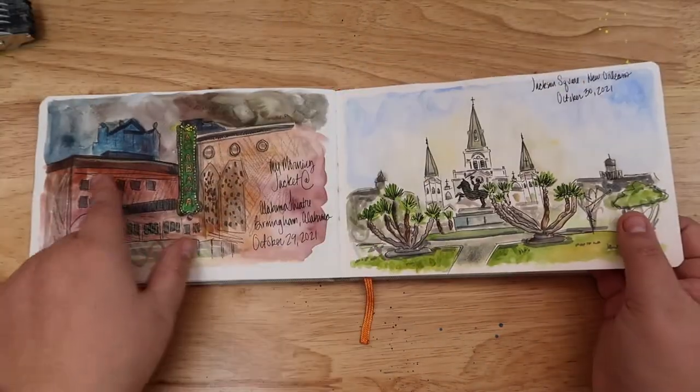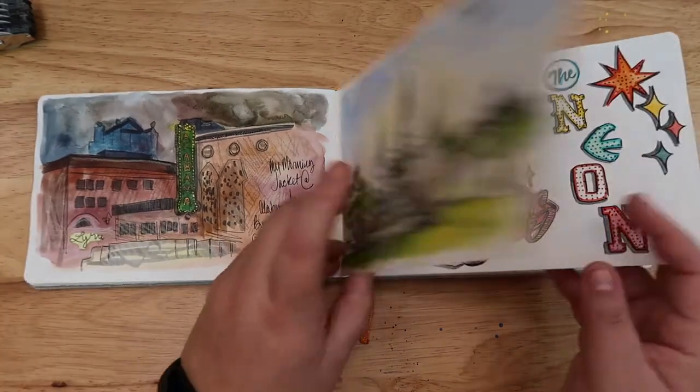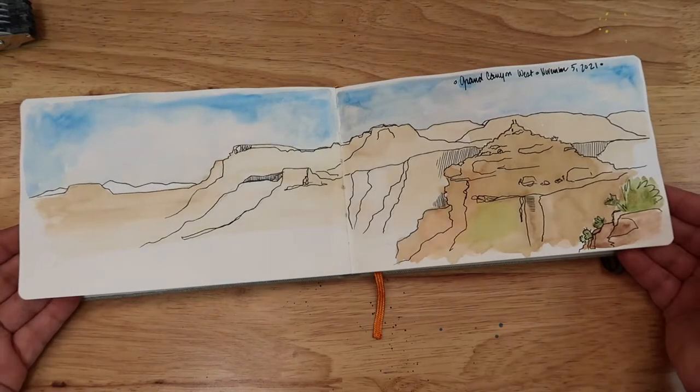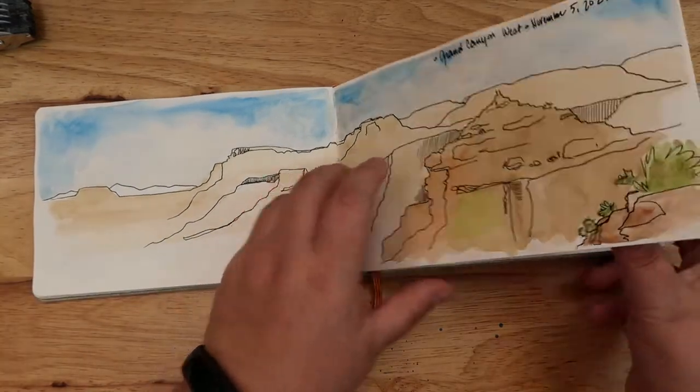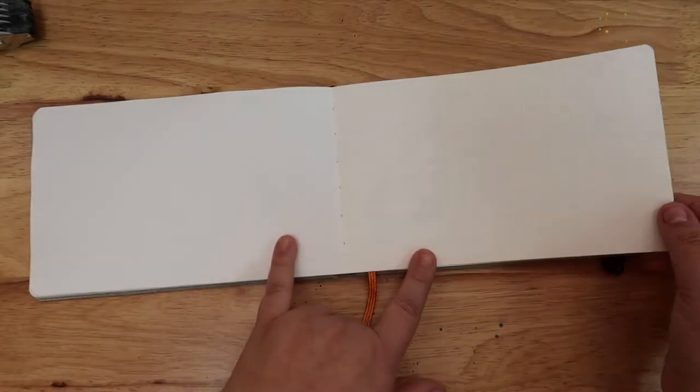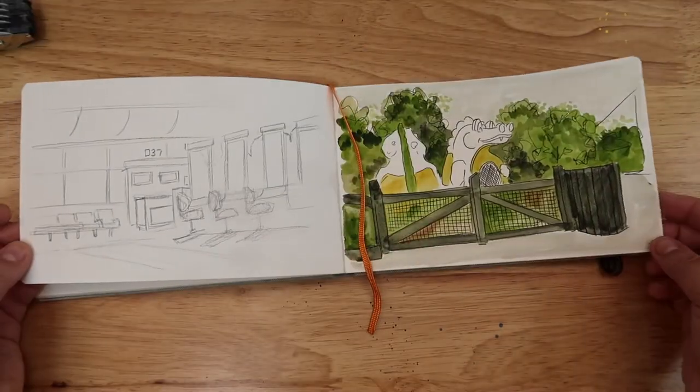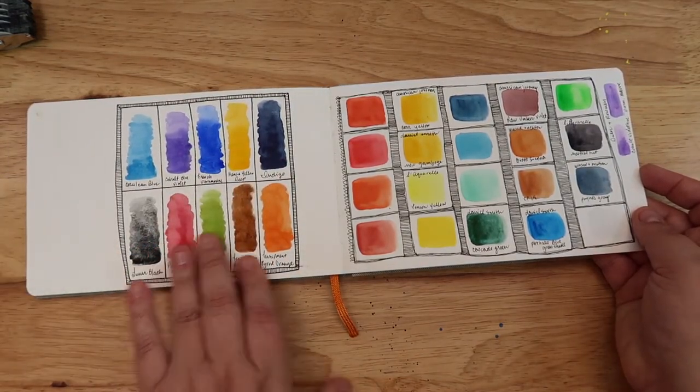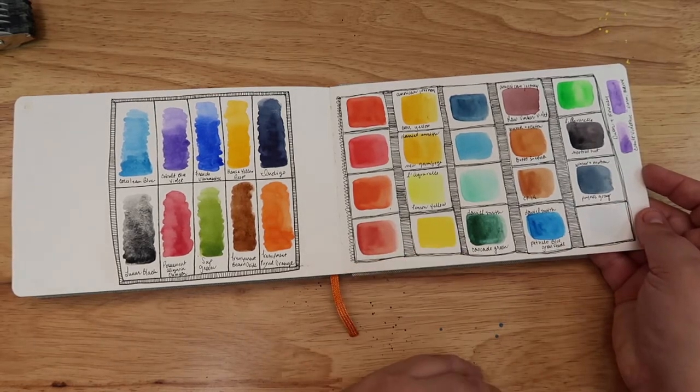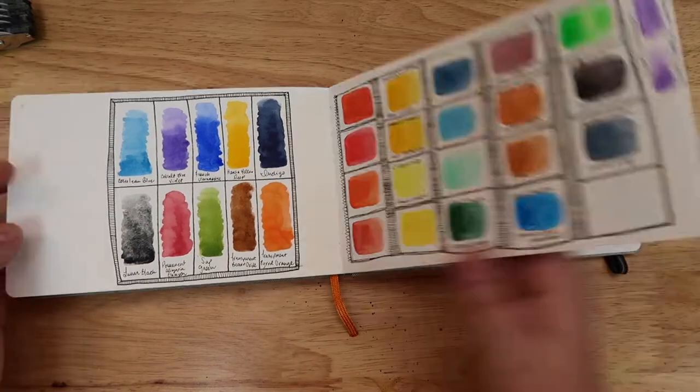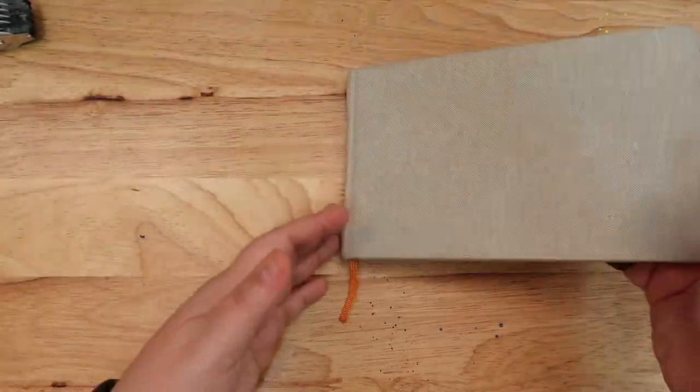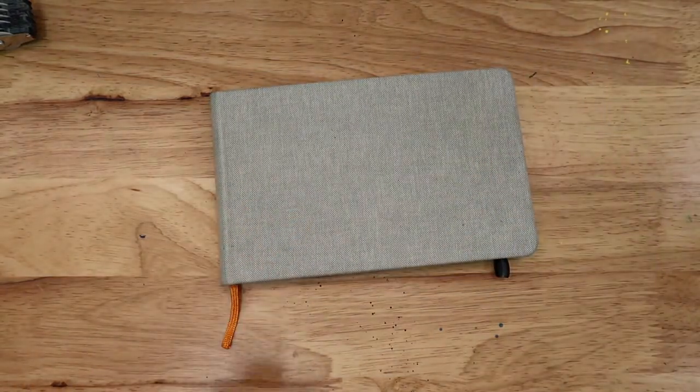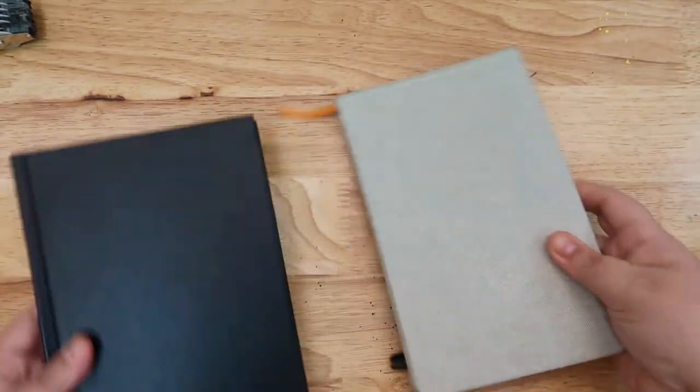Let's do a real quick flip through. Some of these are unfinished—I need to go back and do some highlights on this one. It's a pretty good start. I did this, which is my travel palette, so I could tell which colors I'm using, and here's another travel palette I've been using.